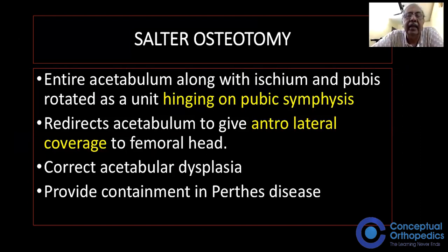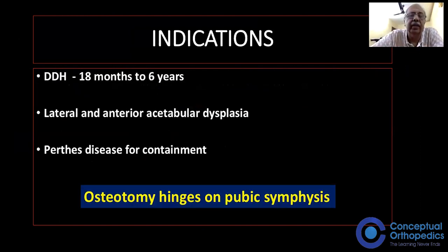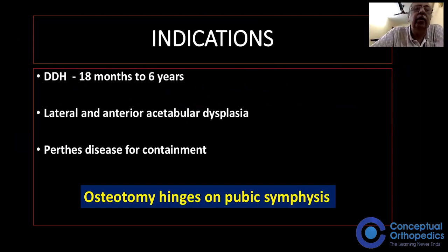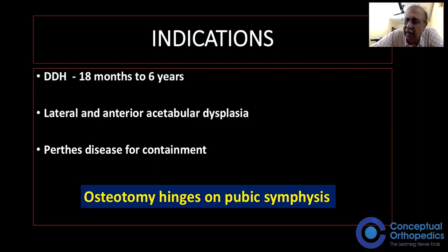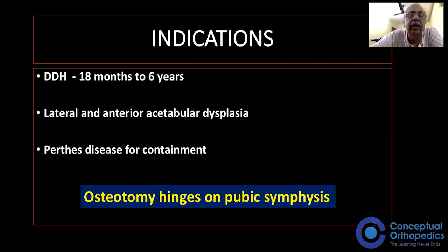It corrects acetabular dysplasia and provides containment in the case of Perthes disease. Indications include DDH in the age group of 18 months to 6 years, and in lateral and anterior acetabular dysplasia. It is also indicated following neuromuscular disorders like cerebral palsy, or in Perthes disease for containment. The examiner may ask where the hinge is — the hinge is on the pubic symphysis.